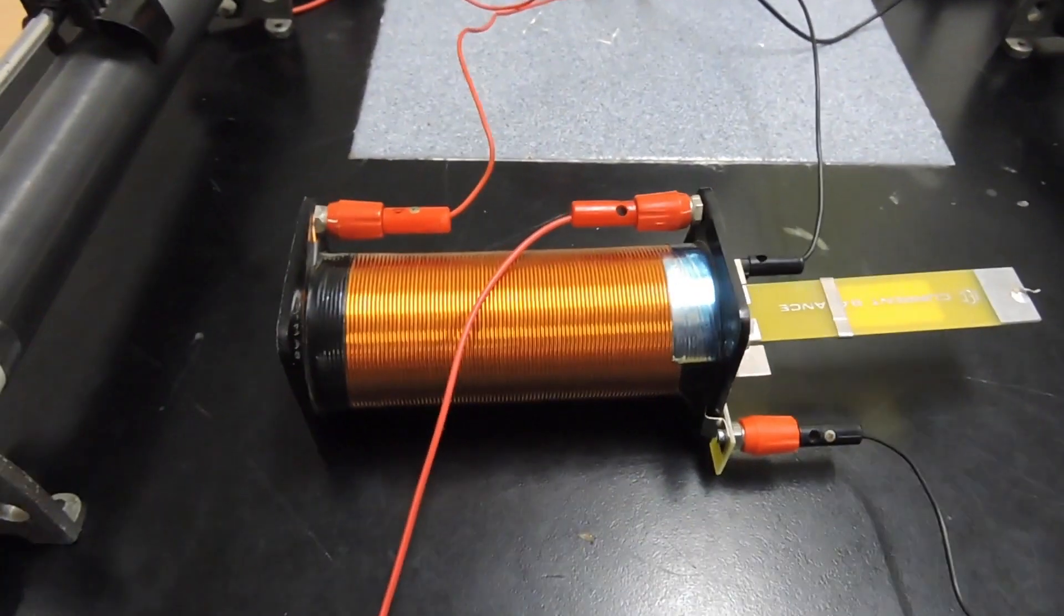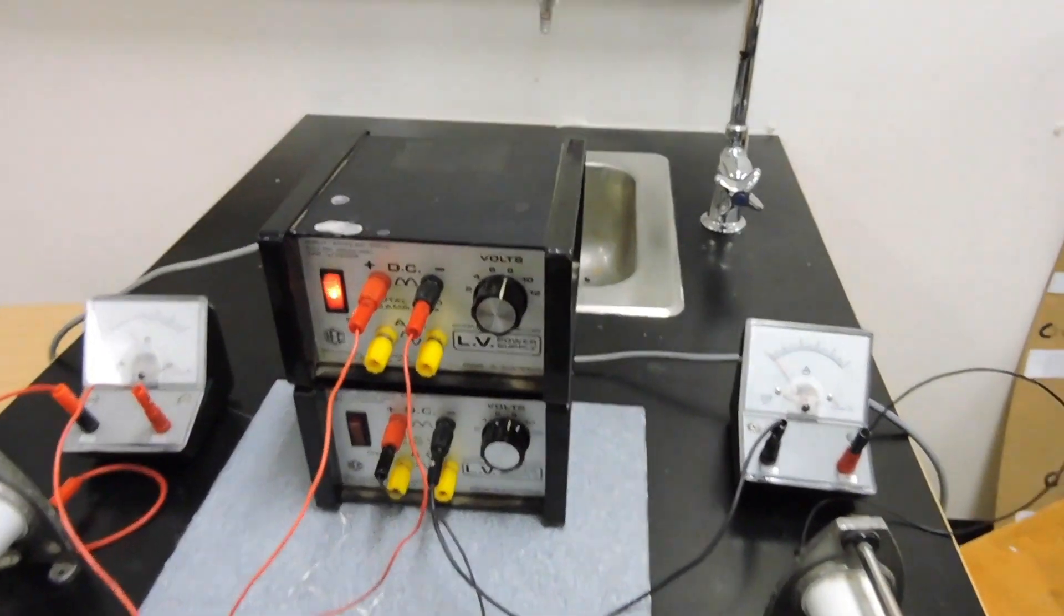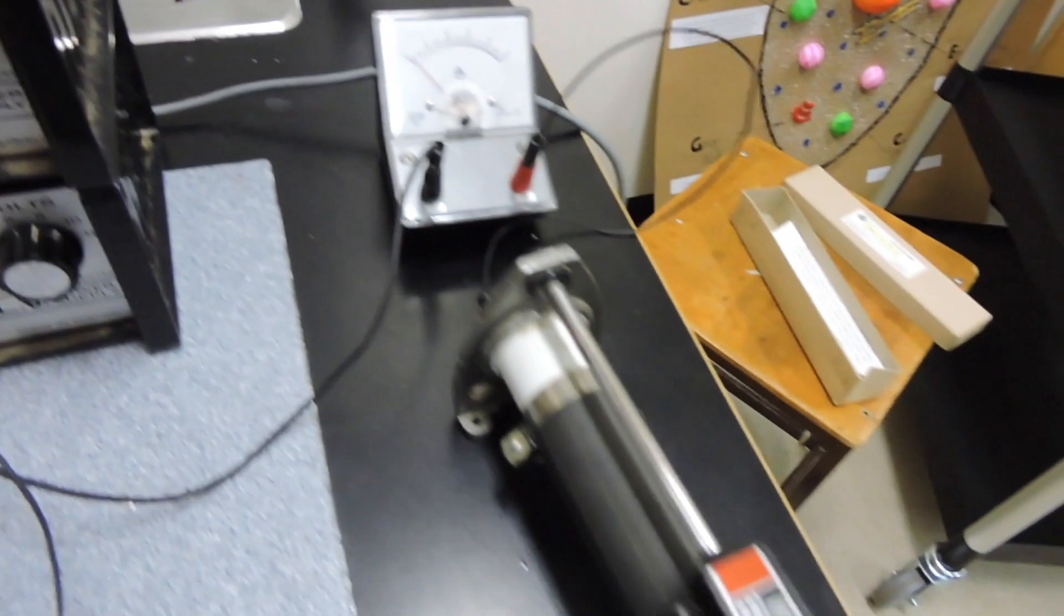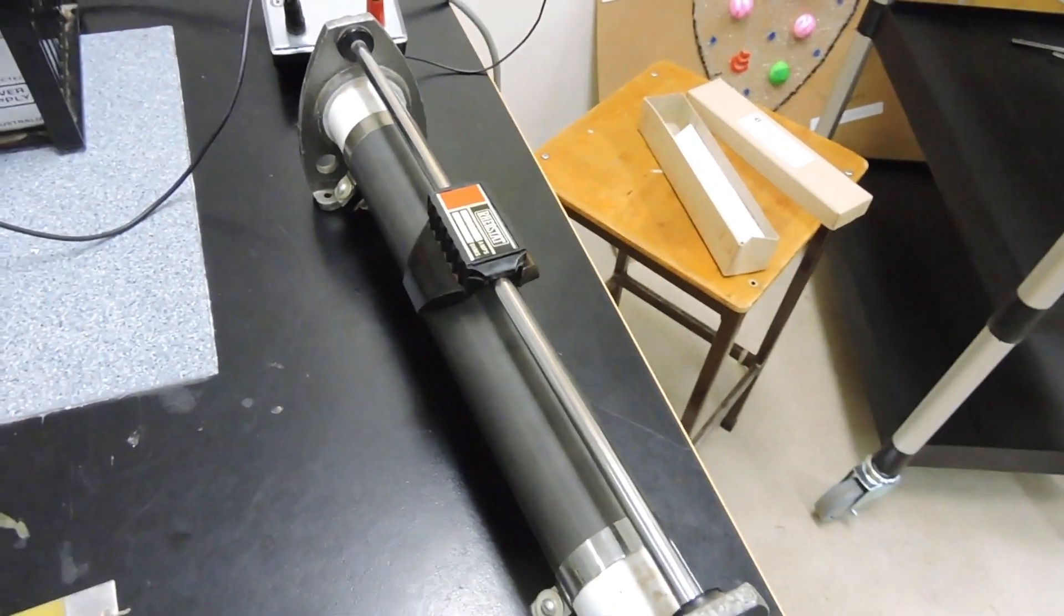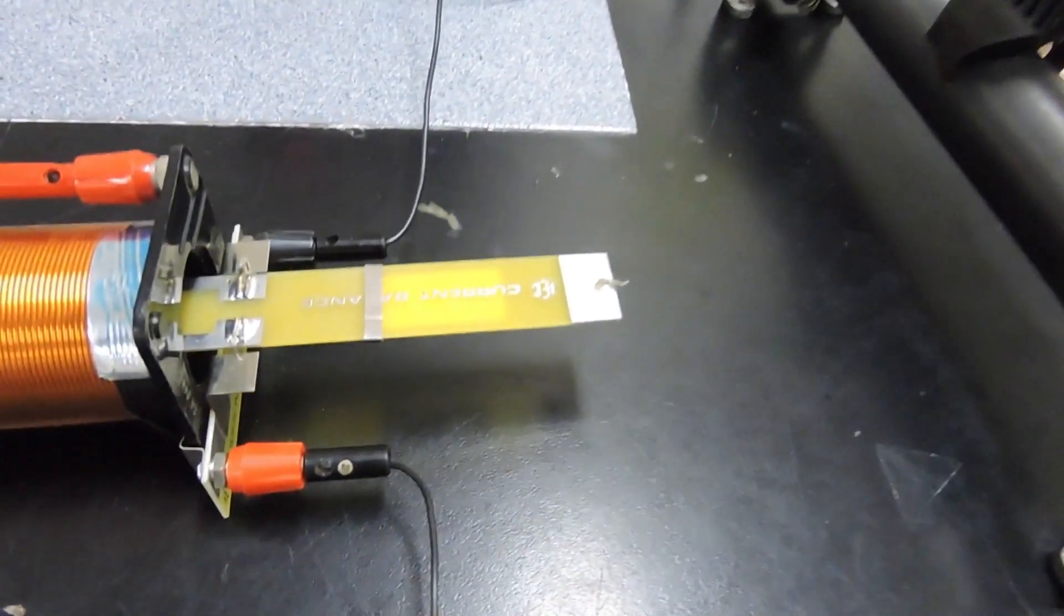Now my second circuit, which isn't switched on yet. I have my ammeter and I have my rheostat again. I can control the amount of current going through, and over here I have my current balance.